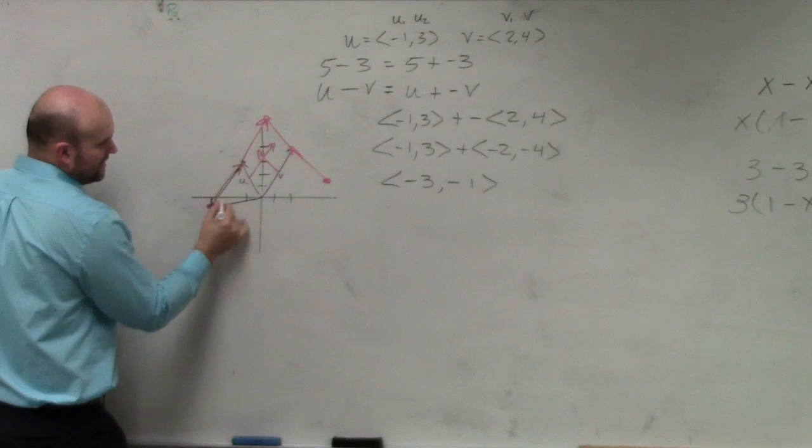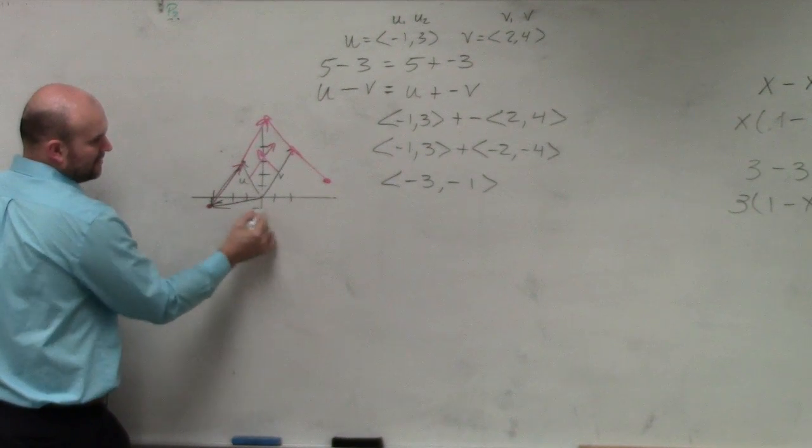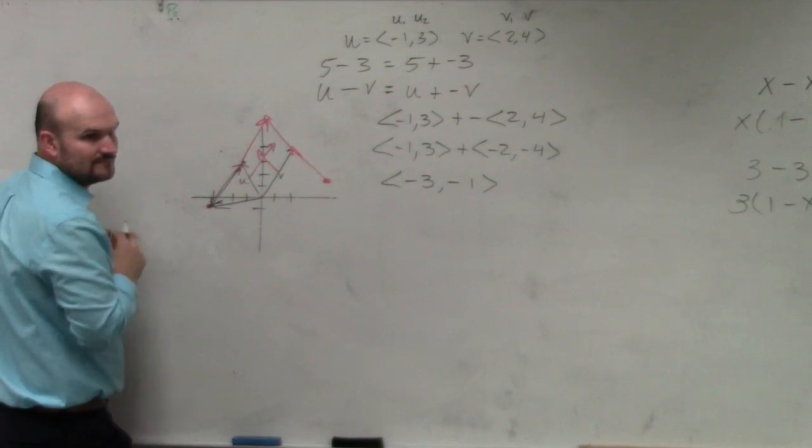So now, there's my resultant vector. And you can see it's one, two, three. Down one. Negative three. Negative one. Done. Yes?